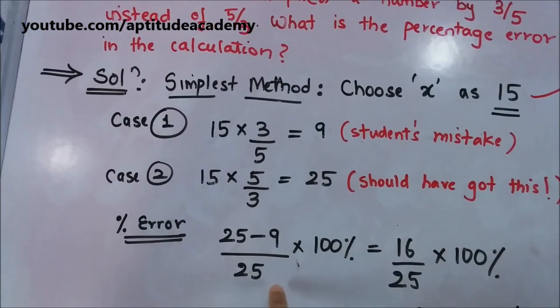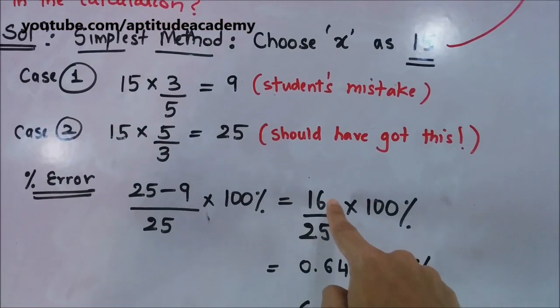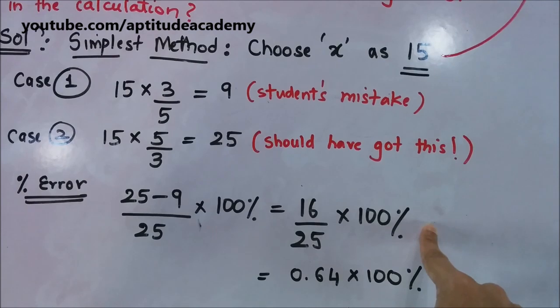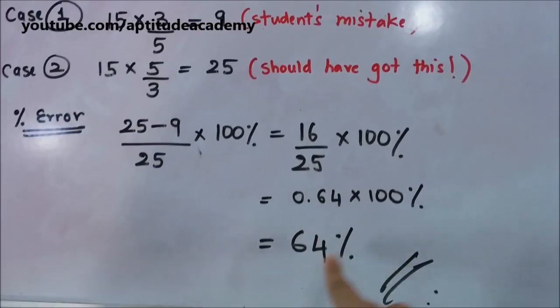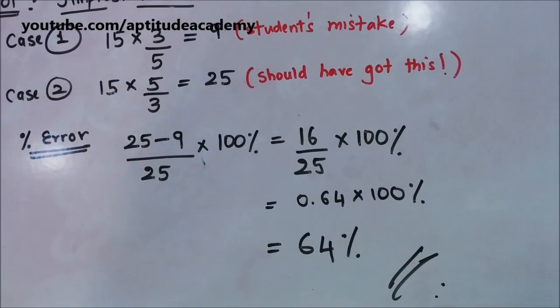So, (25 - 9)/25 × 100%. 25 - 9 = 16, so 16/25 × 100%. 16/25 = 0.64, and 0.64 × 100% = 64%. That is your answer. Thank you.